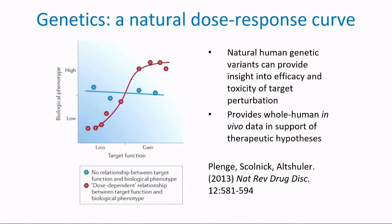This builds on work that has obviously been going on for many decades in the context of Mendelian disease studies, but taking an approach where we can leverage the enormous amounts of genetic and phenotypic data collected by the many cohorts present here today. I want to start with a figure from a 2013 review paper by Robert Plange, Ed Skolnick, and David Altshuler, laying out one of the key advantages of human genetics in drug target validation.